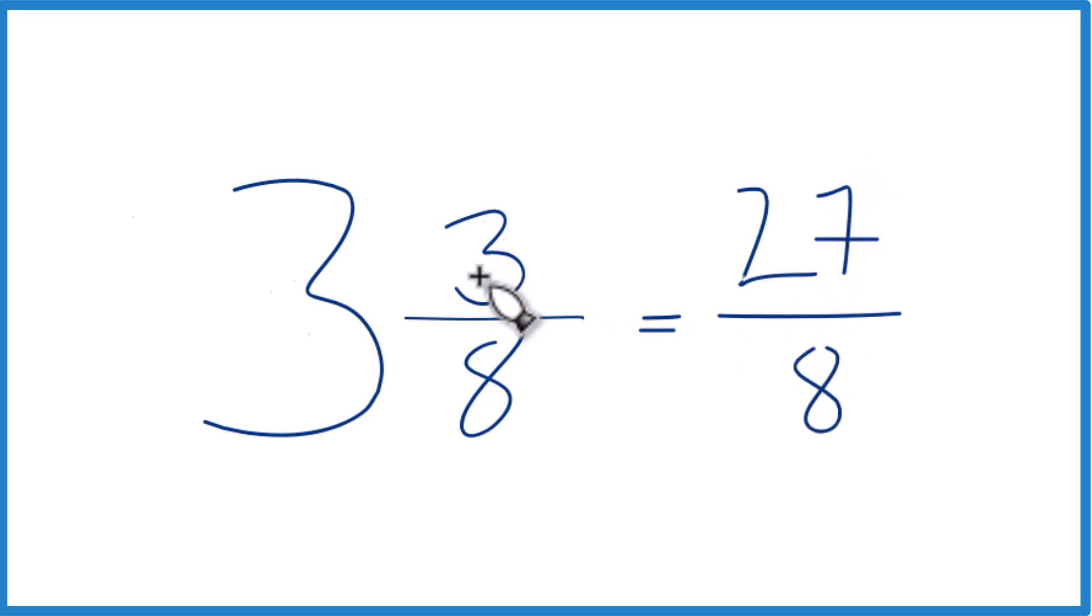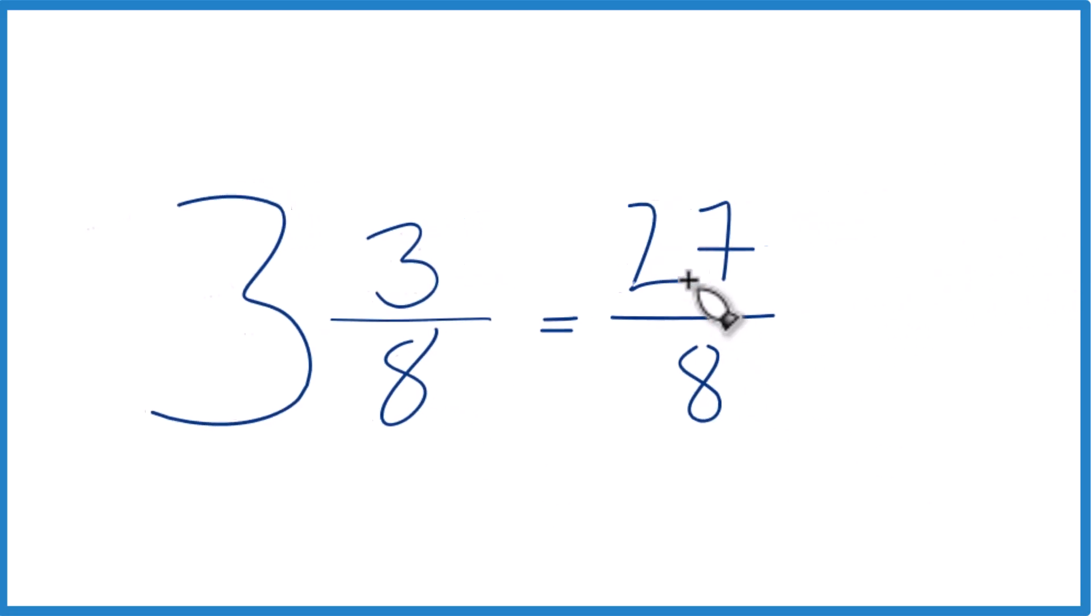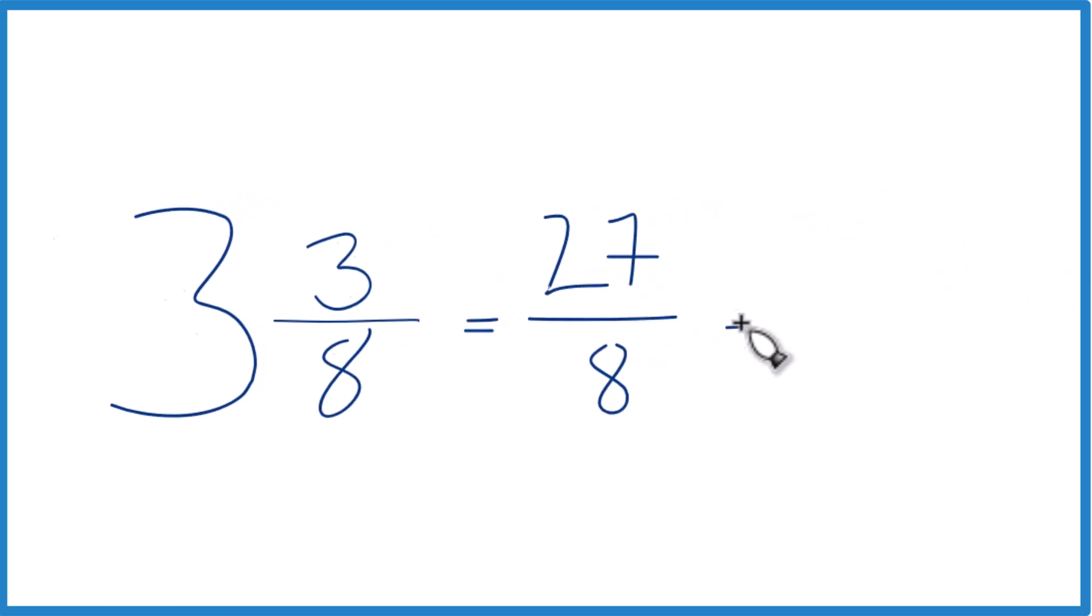That's the improper fraction for the mixed number, 3 and 3 eighths. And we can check that because 8 goes into 27, 3 times 8 is 24 with 3 left over. Bring the 8 across, 3 and 3 eighths. That's what we started with.